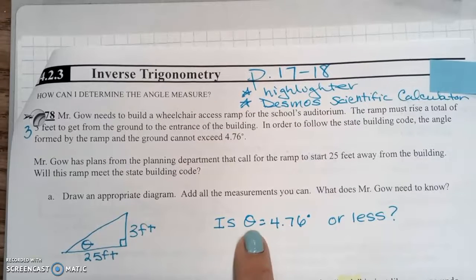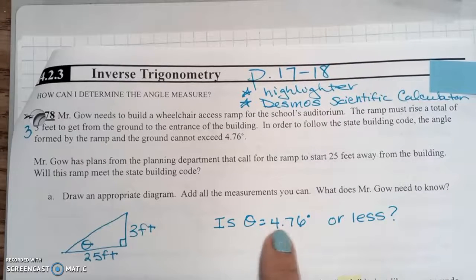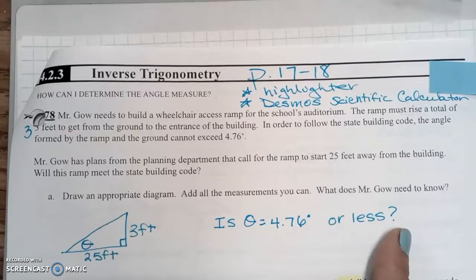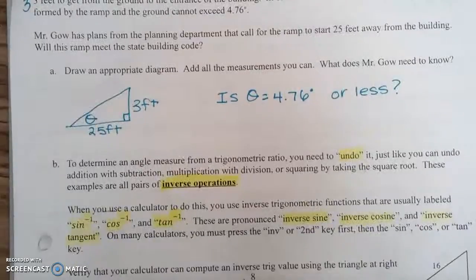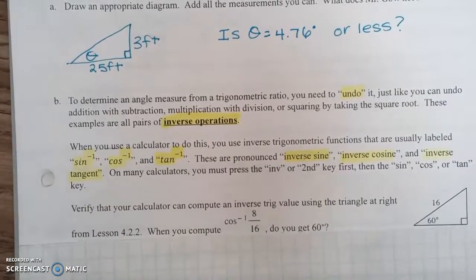And we want to know, is that theta 4.76 degrees or it could be less? You just can't have greater than 4.76 or it won't meet the wheelchair code. What happens if a ramp's too steep? What happens to a wheelchair? It flips over, goes flying. So you can't have too steep of a ramp, or that wheelchair is going to have problems getting up and down. Especially going down, you might have some problems here.